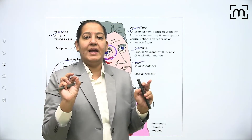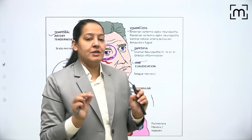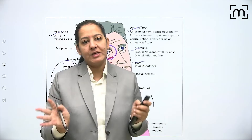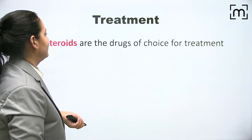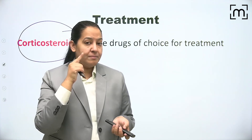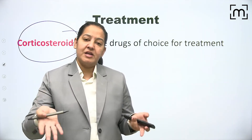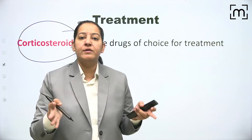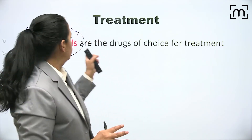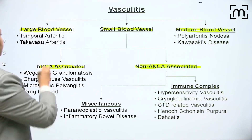If a middle-aged female presents with raised ESR and these symptoms, the doctor's suspicion should be temporal arteritis and a biopsy should be taken to confirm. The treatment is to immediately start steroids. If the patient presents with only temporal headache, steroids prevent progression to blindness, because if untreated, inflammation can involve the ophthalmic artery causing irreversible blindness.